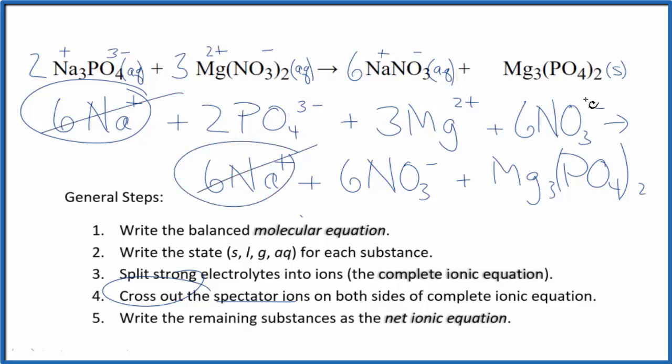We have 6 nitrate ions here and then again in the products, we can cross those out. Everything else is unique. That makes this the net ionic equation for sodium phosphate plus magnesium nitrate.